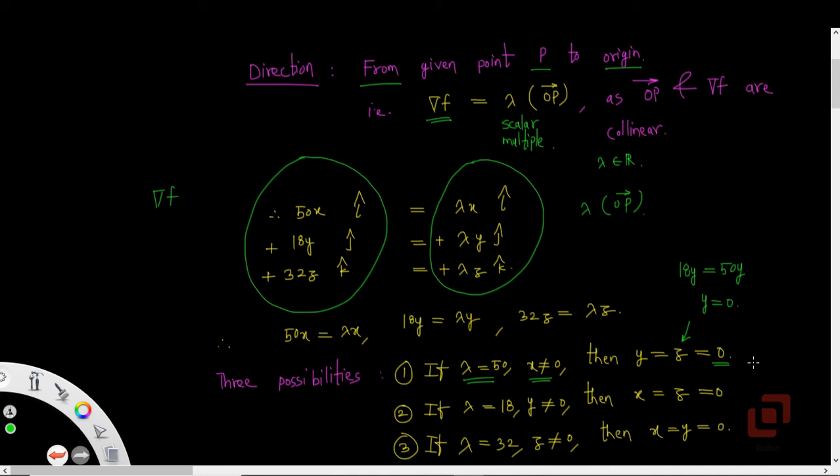So the first possibility is telling us that one of the required directions must be along the x-axis, where both y and z coordinates are 0.